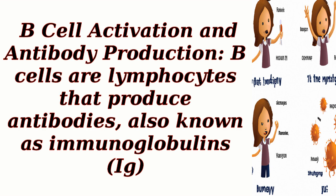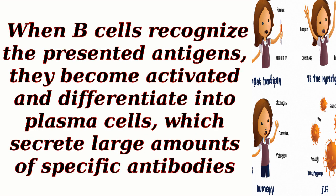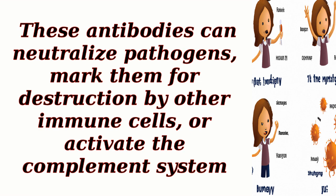B-cell activation and antibody production: B-cells are lymphocytes that produce antibodies, also known as immunoglobulins. When B-cells recognize the presented antigens, they become activated and differentiate into plasma cells, which secrete large amounts of specific antibodies. These antibodies can neutralize pathogens, mark them for destruction by other immune cells, or activate the complement system.